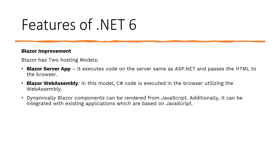Some other features include improvements in Blazor. Blazor has two hosting models. The first is Blazor Server, which executes code on the server similarly to ASP.NET and passes HTML to the web browser. The second is Blazor WebAssembly, where C# code is executed in the browser using WebAssembly. Additionally, Blazor components can be rendered dynamically from JavaScript, and Blazor can be integrated with existing JavaScript-based applications.